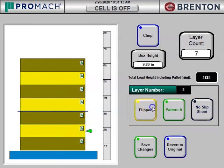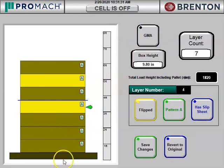And let's say the first three layers are all column stack. And after that, we start flipping every other layer so we have a nice interlock. And let's say instead of a slip sheet on layer three, we put a slip sheet on layer four. And let's say it's a GMA palette instead of a CHEP palette.